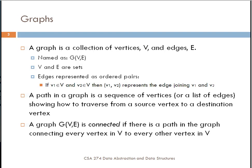A couple weeks ago, we talked about what graphs were. A graph is a collection of vertices and edges. You can name a graph, and the naming includes the names of the sets for the vertices and the edges. Edges themselves are represented as ordered pairs, a pair of vertices from the vertex set. Those ordered pairs represent an edge that joins nodes V1 and V2.